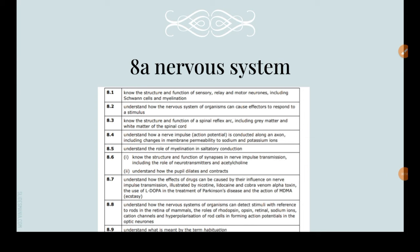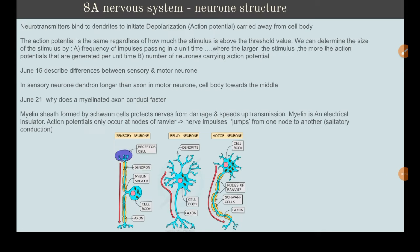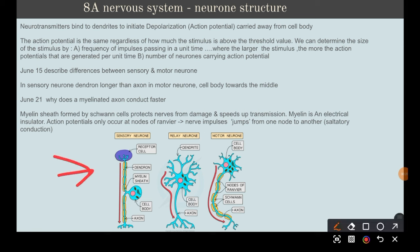Schwann cells are the cells that produce myelin sheath. You have to memorize those three neuron structures because they can ask you to draw them or ask about details for them. For example, here is a past paper question from June 2015 where they ask you to describe the differences between sensory and motor neurons.